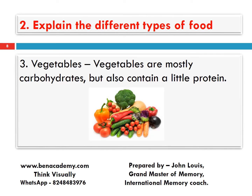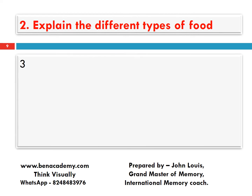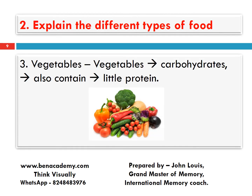Imagine these vegetables — they are mostly carbohydrates and protein is in small quantity. The keywords: vegetables contain carbohydrates in large quantity and also contain a little protein. Visualize it in your mind and try to reframe the sentence: vegetables are mostly carbohydrates but they also contain a small quantity of protein.